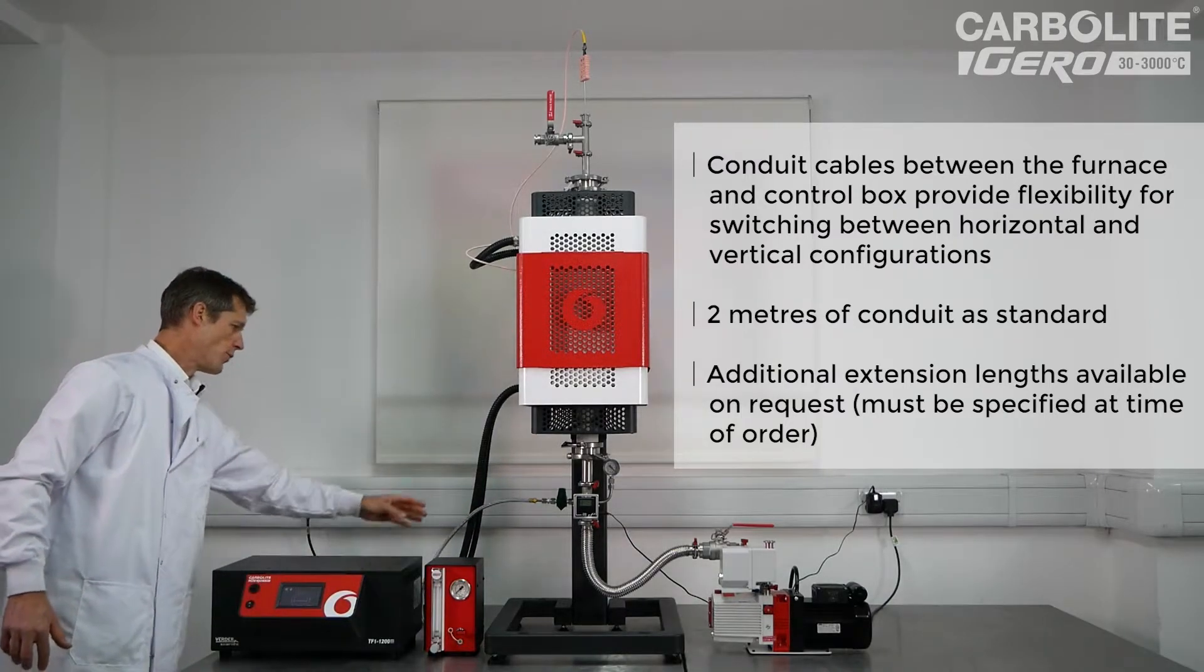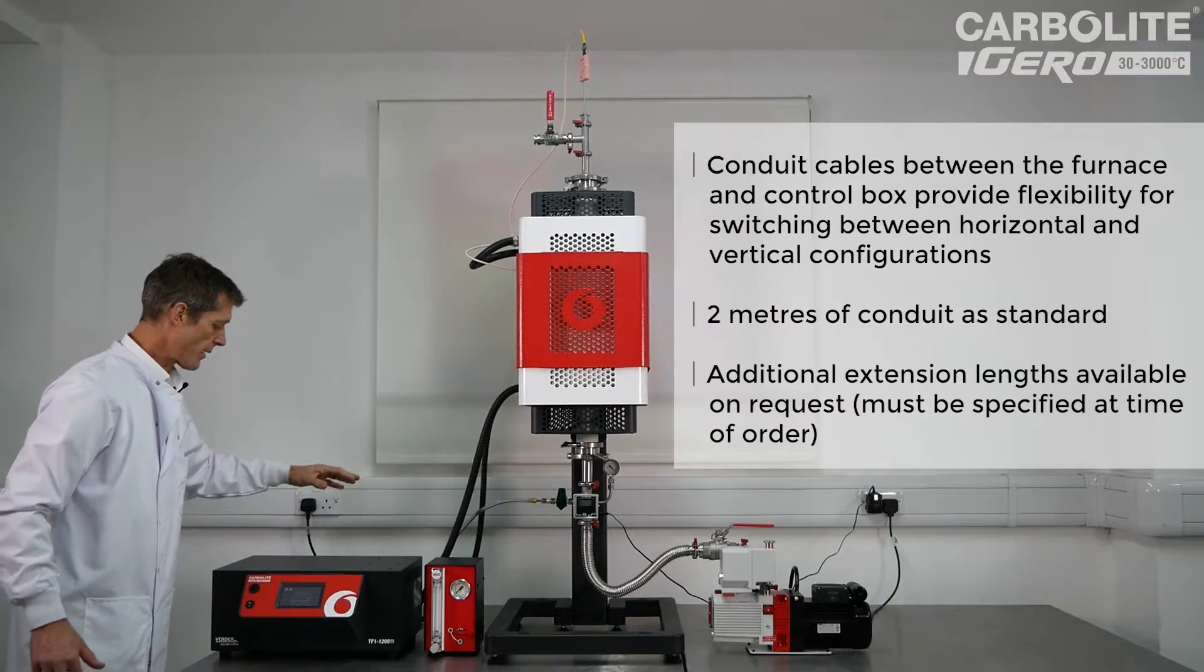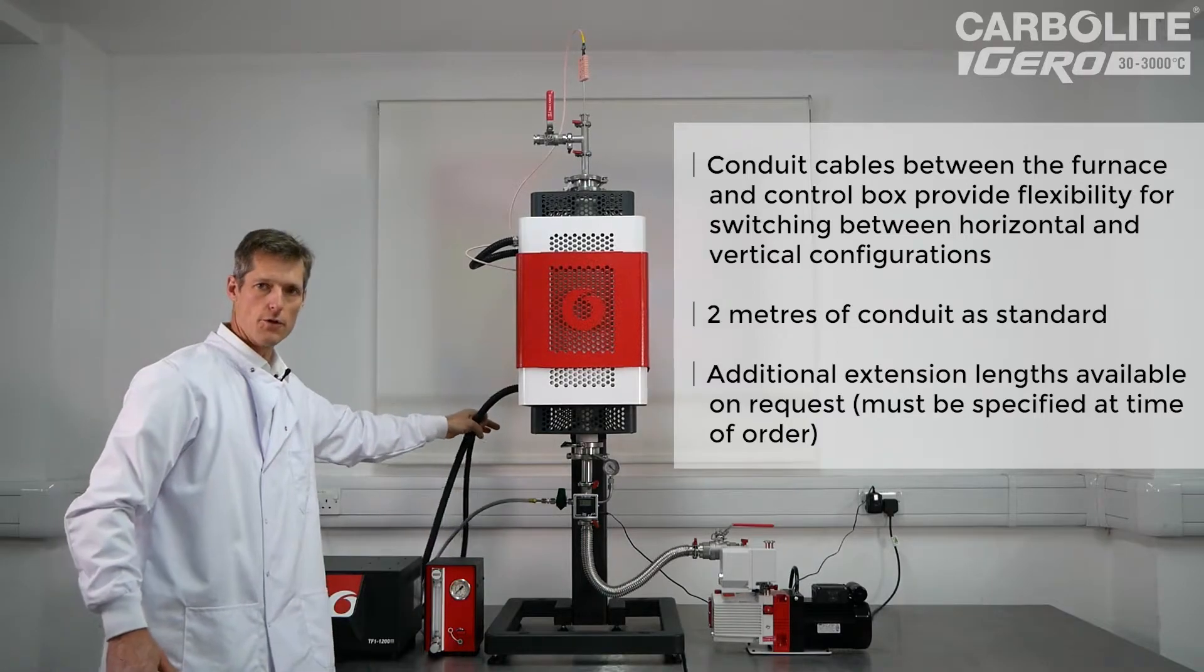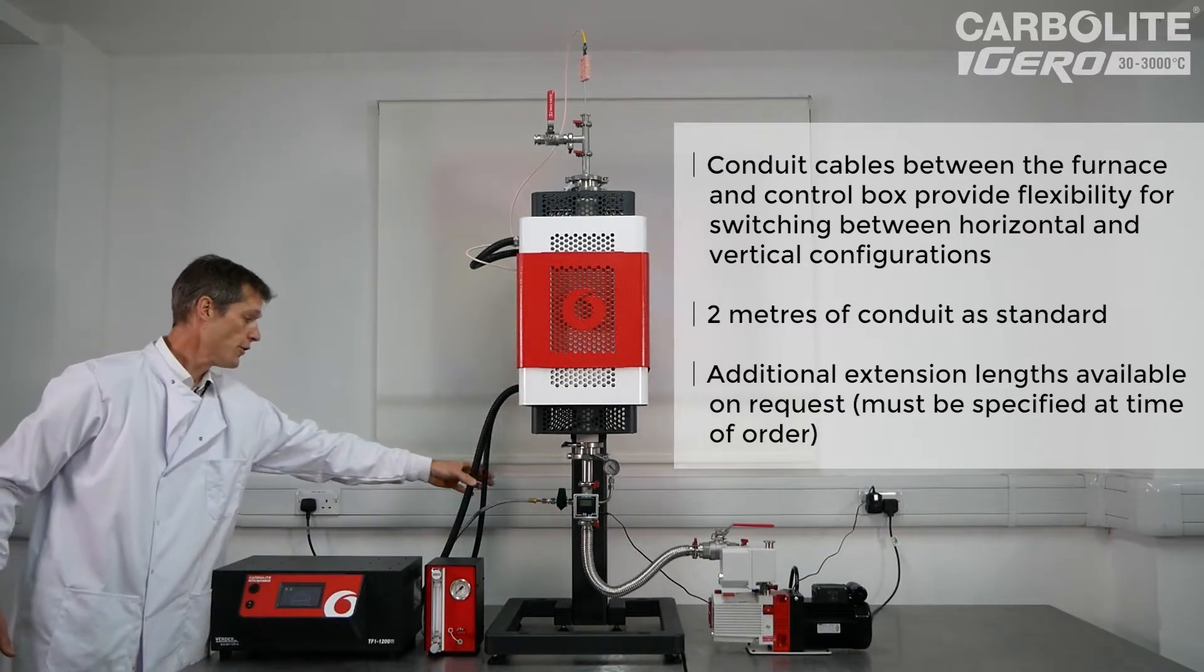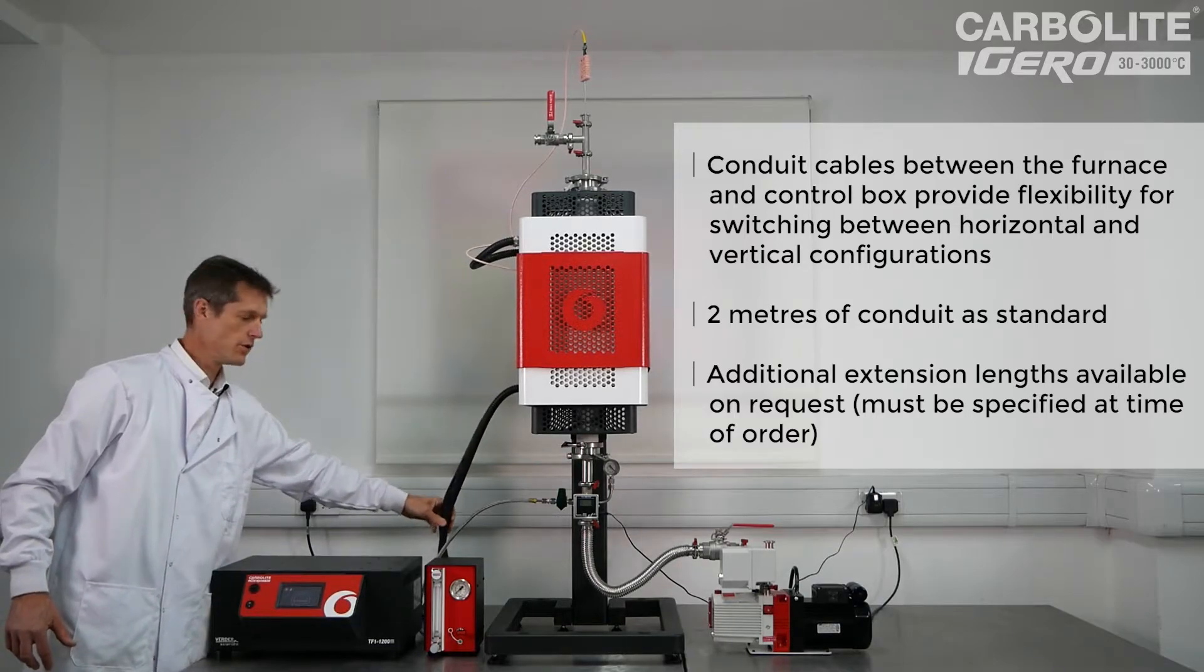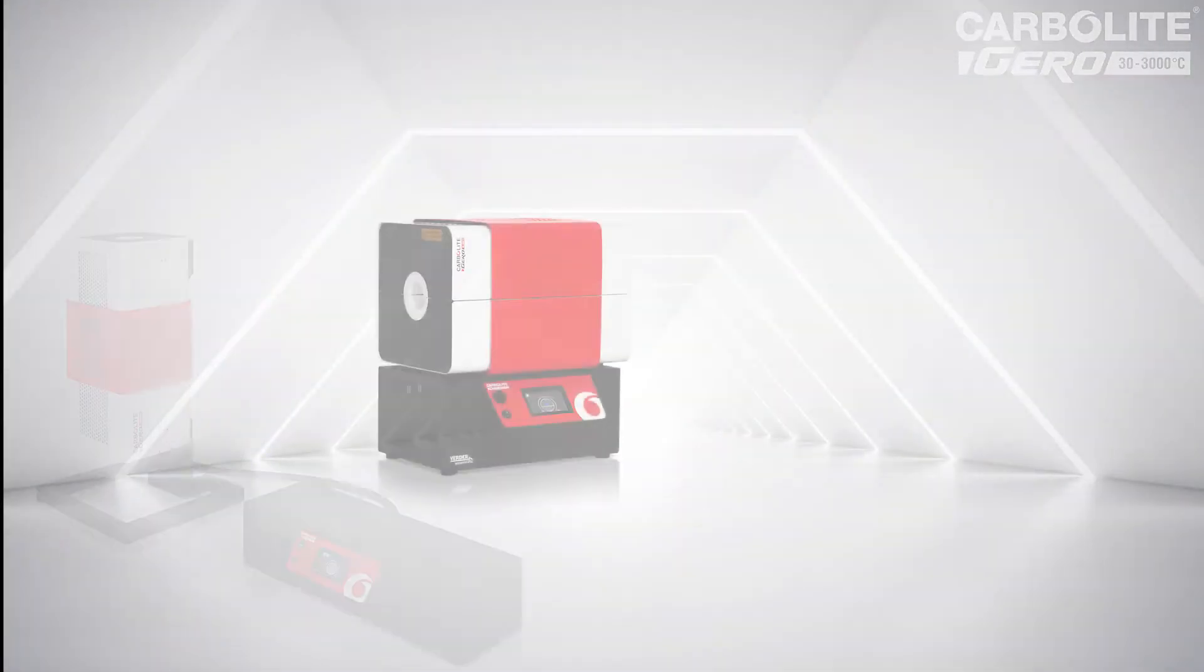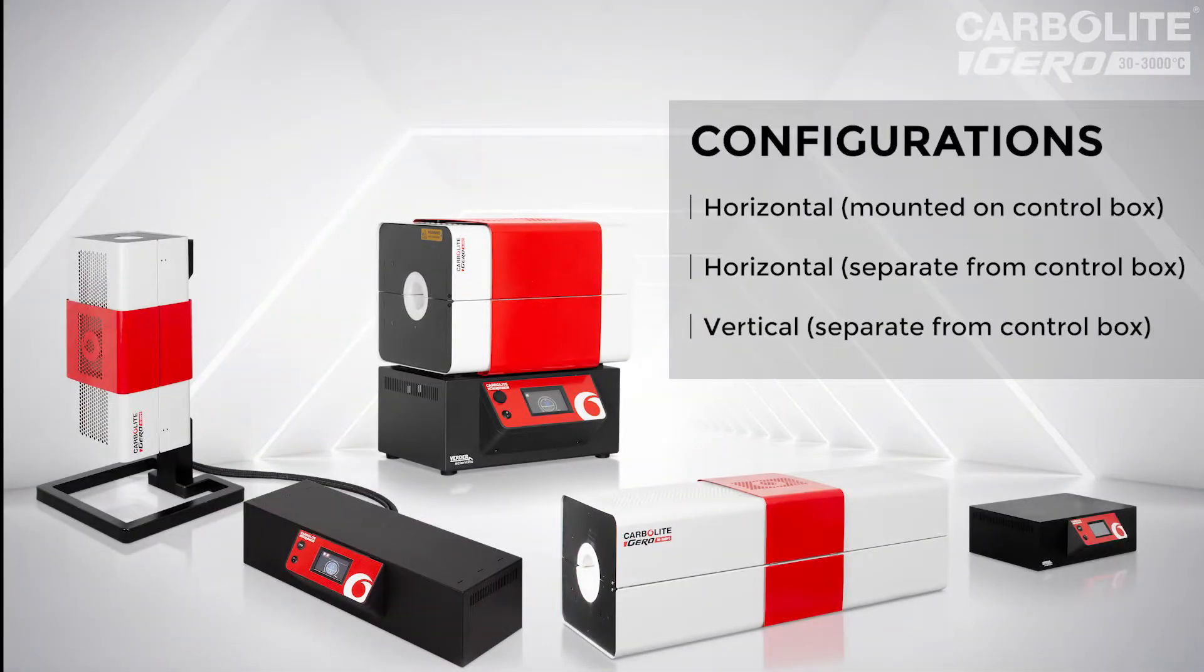The conduits, one for power and one for temperature signals, can be detached from the control box should they need to be fed through small aperture. And further extension lengths are available as well, so you can have more than two metres if necessary.